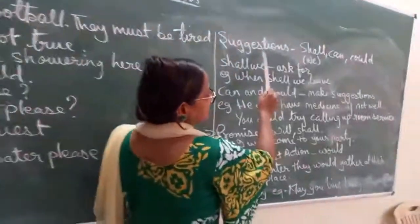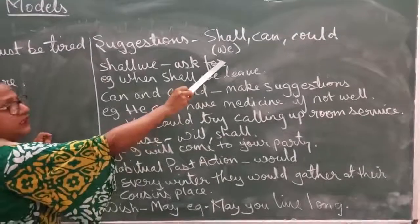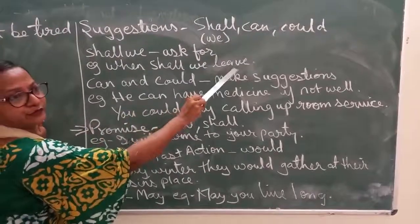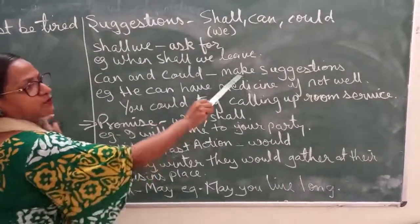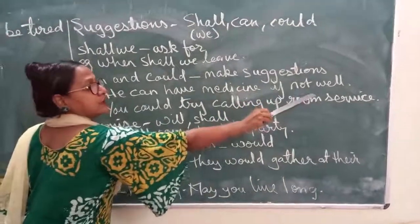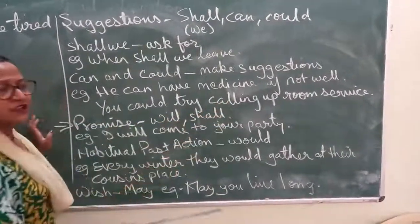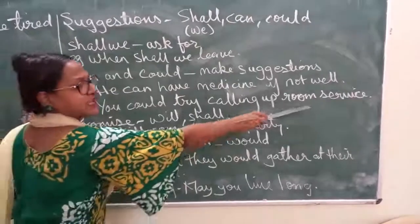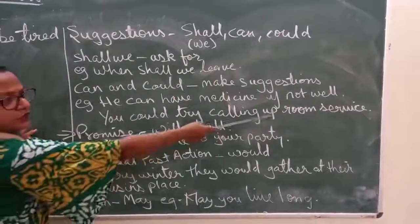Then comes suggestions. In suggestions we use the modals shall, can, and could. With shall we use we — for example, 'When shall we leave?' is used for asking something. Can and could are used for making suggestions — for example, 'He can have medicine if not well' is an advice with a choice. 'You could try calling up room service' — here the person is giving a suggestion that you can call room service.